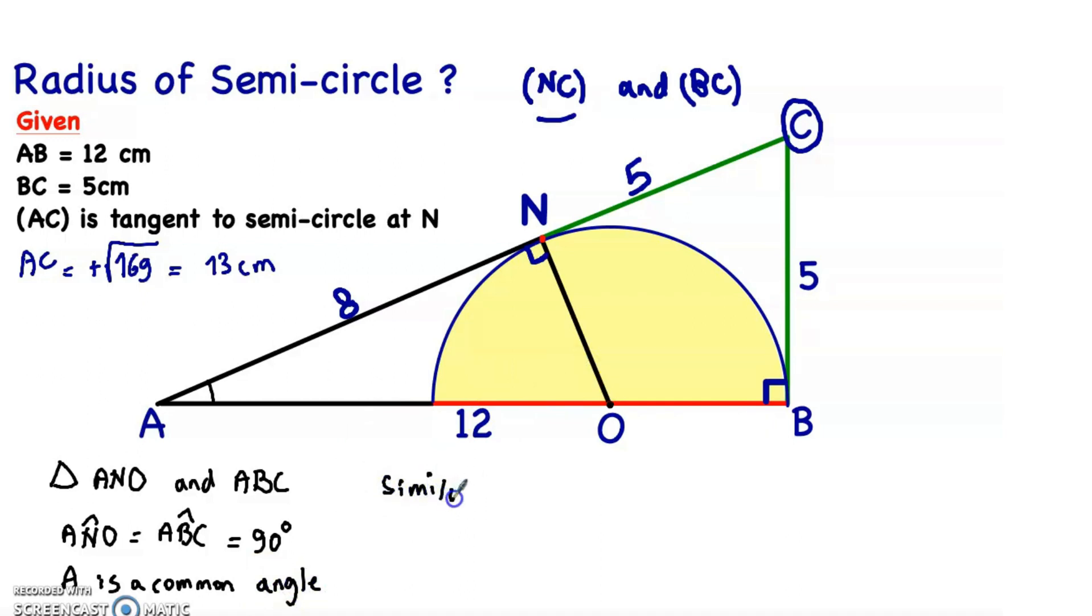Now let's write the ratio of similarities. In triangle ANO, ON over NA - these are the two sides forming the right angle at N - equals the two sides forming the right angle at B, which is BC over AB.